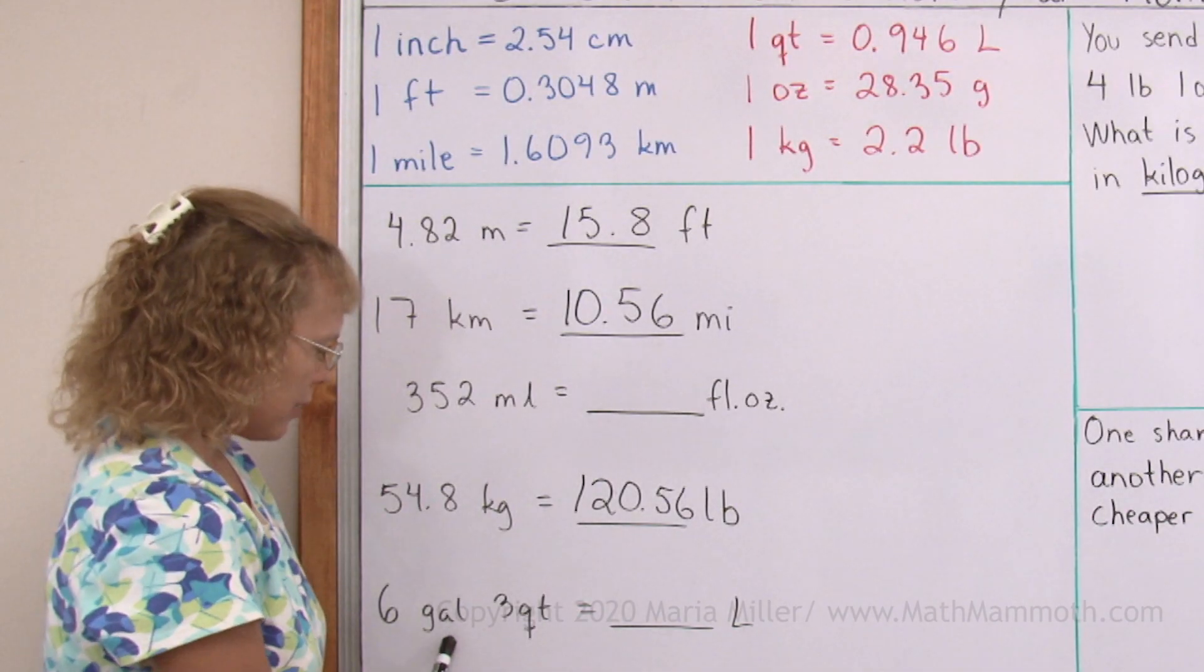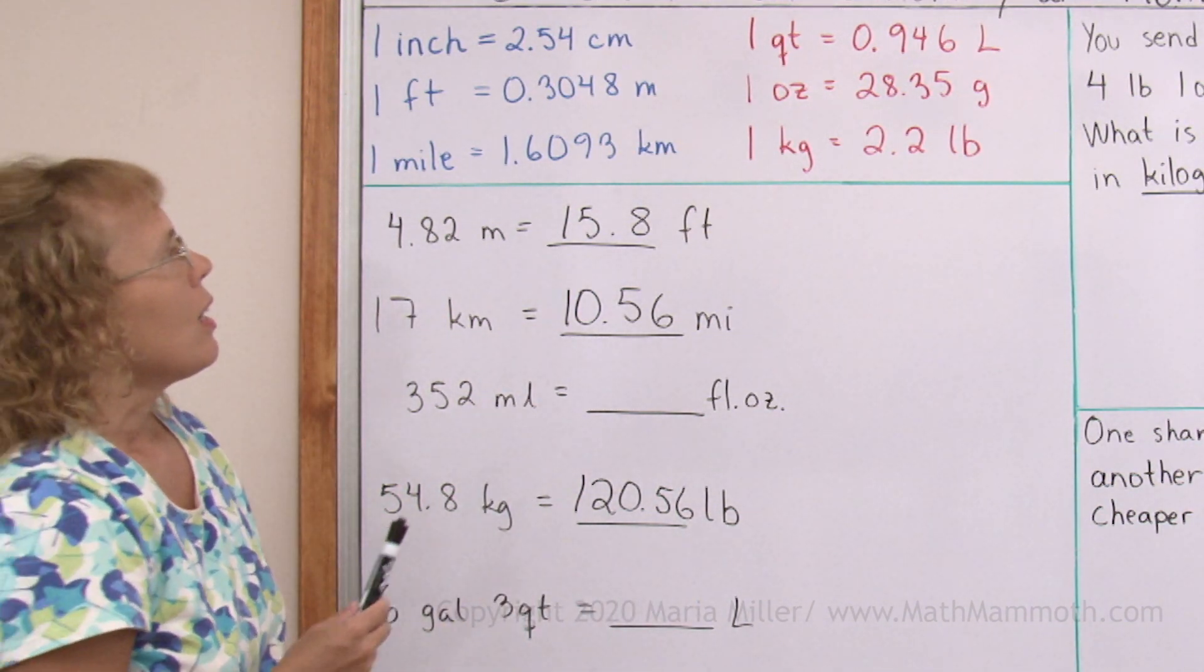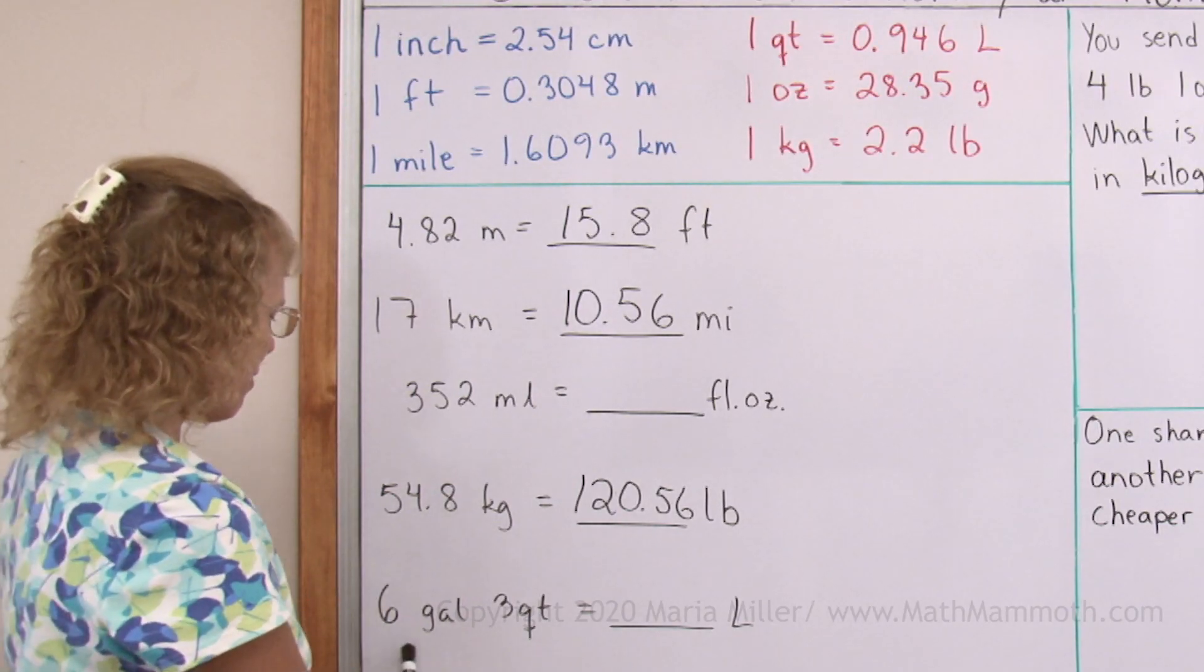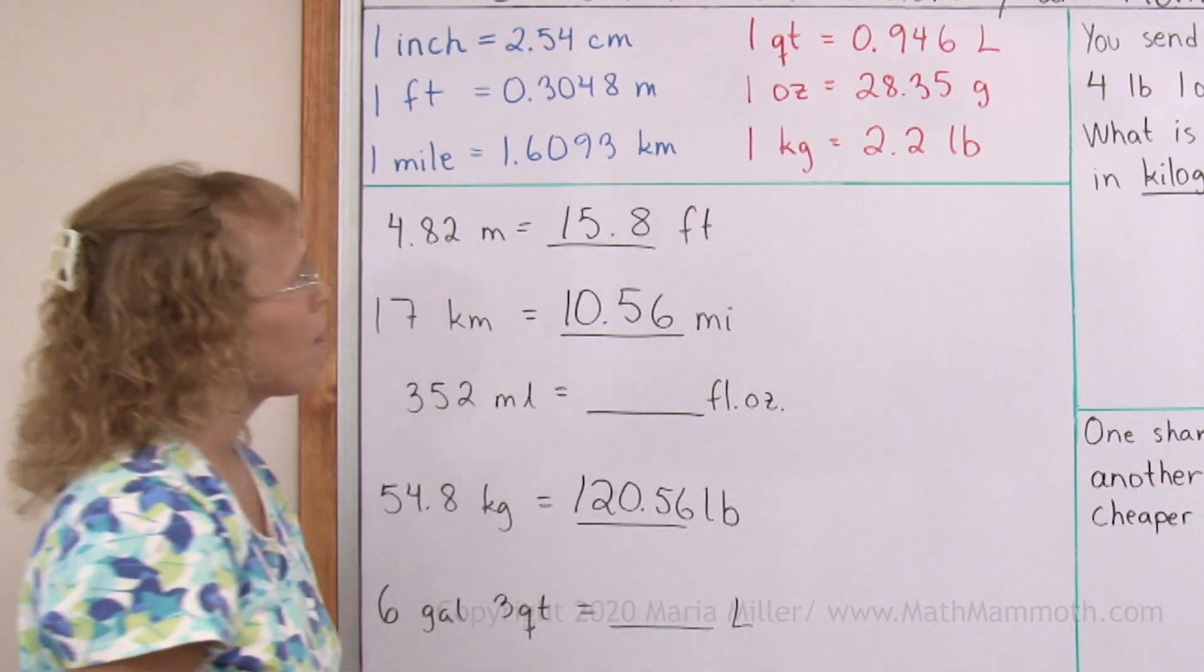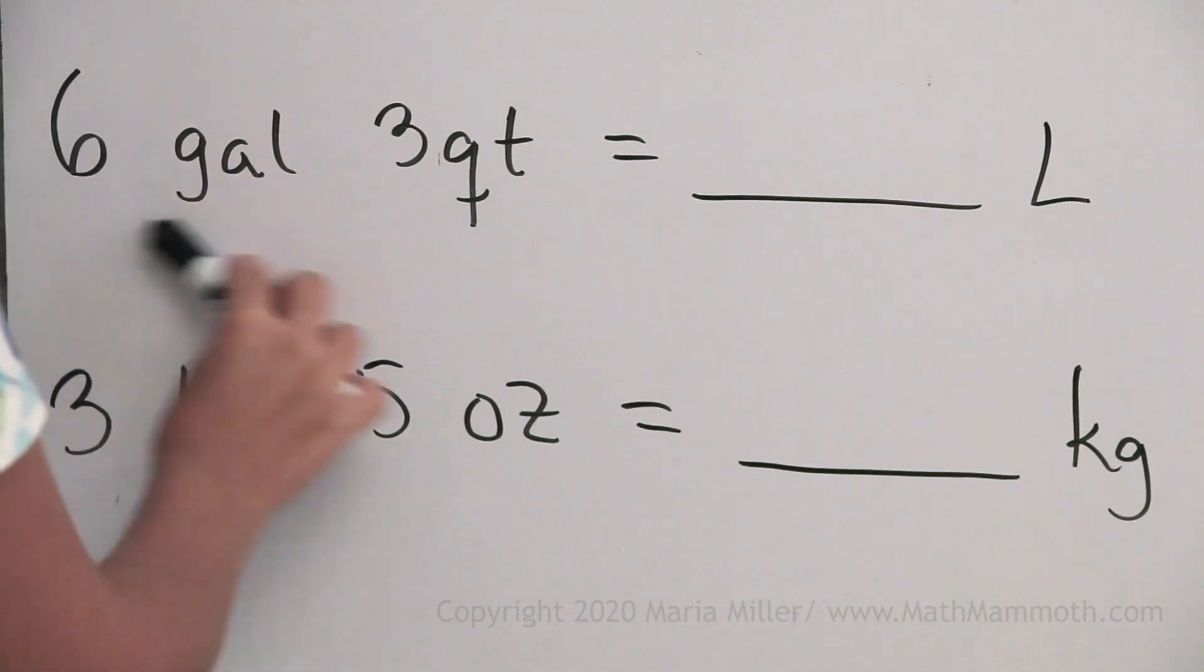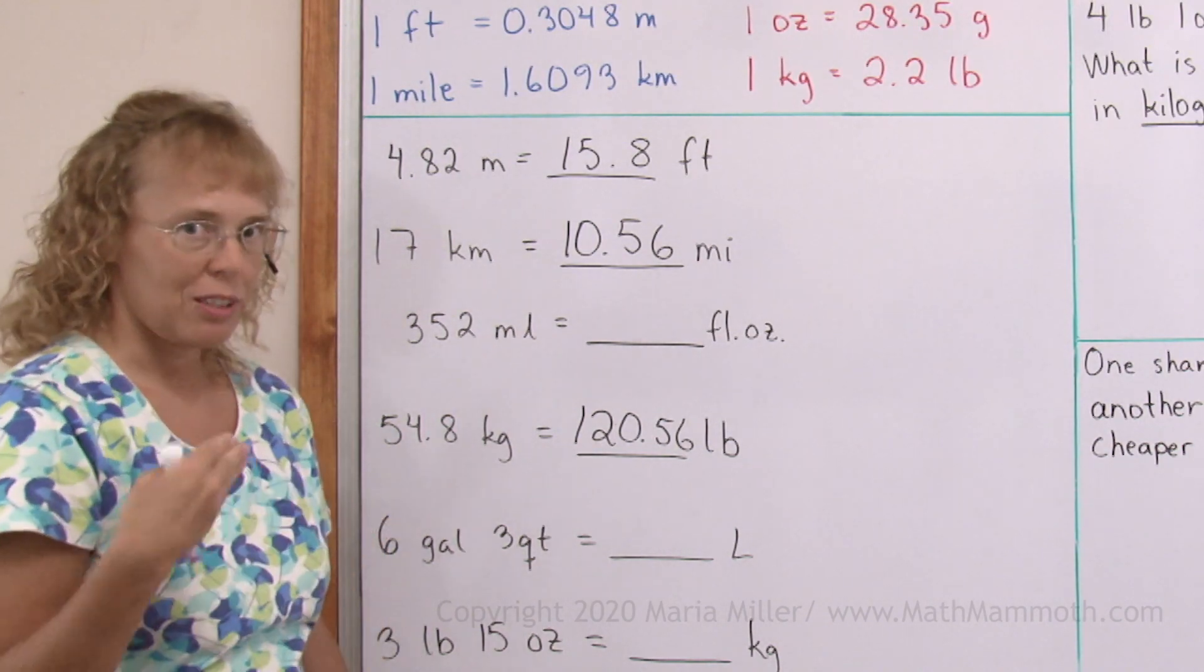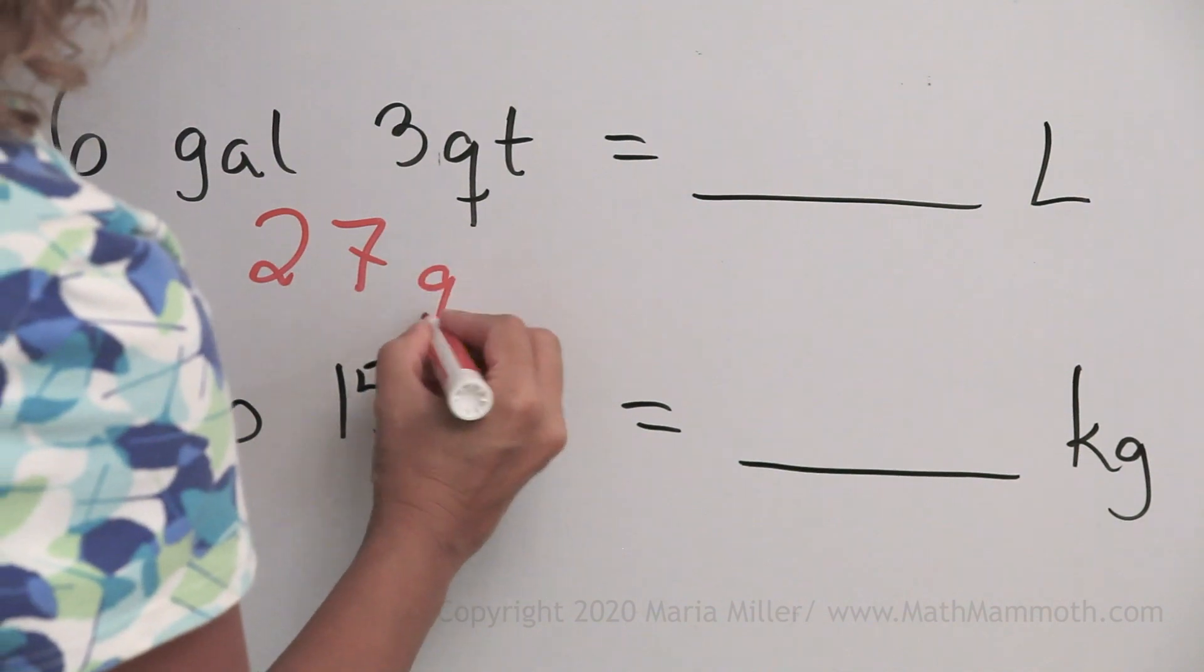Six gallons, three quarts, how many liters? Our conversion factor is one quart equals so many liters, almost one liter. And here we have gallons. I don't have written any conversion factor for gallons here. But what I can do is first change this into so many quarts. Each gallon is four quarts, right? So six gallons, 24 quarts, plus three more. So there's 27 quarts here.